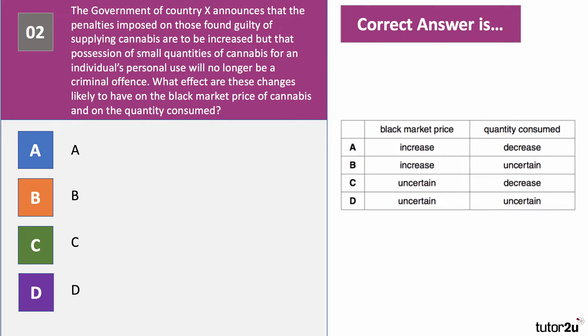Question two. The Governor of X announces the penalties imposed on those found guilty of supplying cannabis are to be increased, but that possession of small quantities for an individual's personal use will no longer be a criminal offence. What effect are these changes likely to have on the black market price of cannabis and the quantity consumed? If we're going to increase the penalties for supply, that's going to limit supply, so a fall in supply is likely to increase the black market price. On the one hand consumption will fall if prices are higher, but on the other hand consumption will rise because the threat of penalties is gone. So we can't be certain what will happen to quantity consumed. The answer is B.